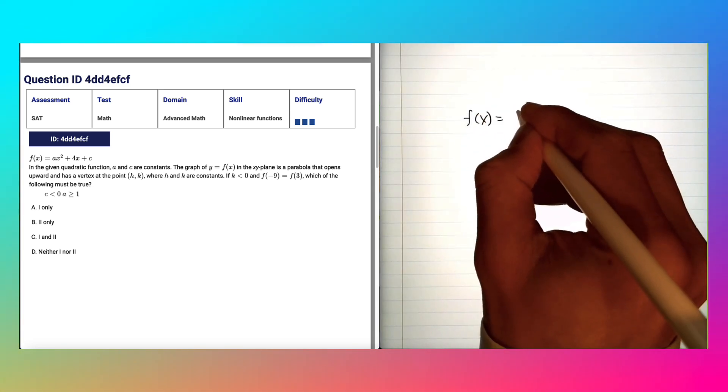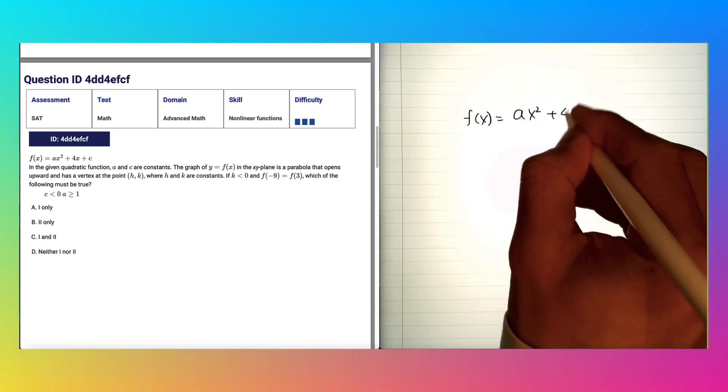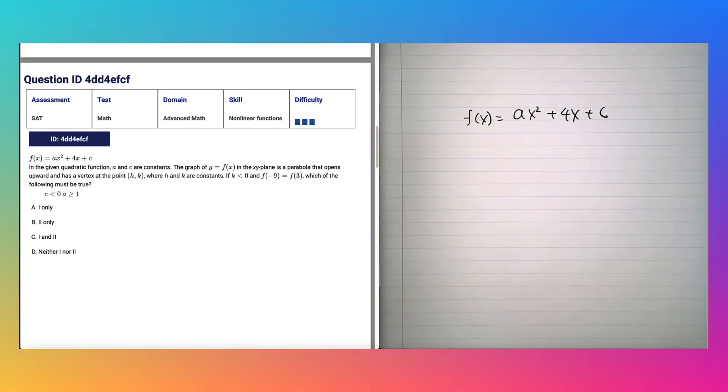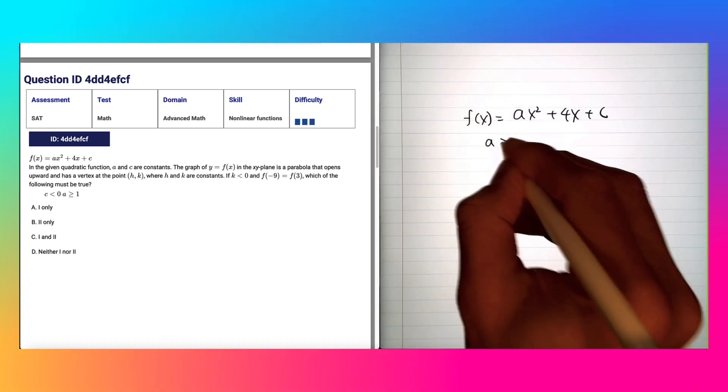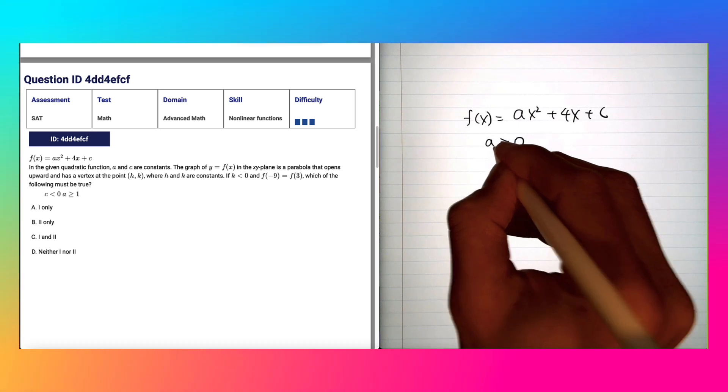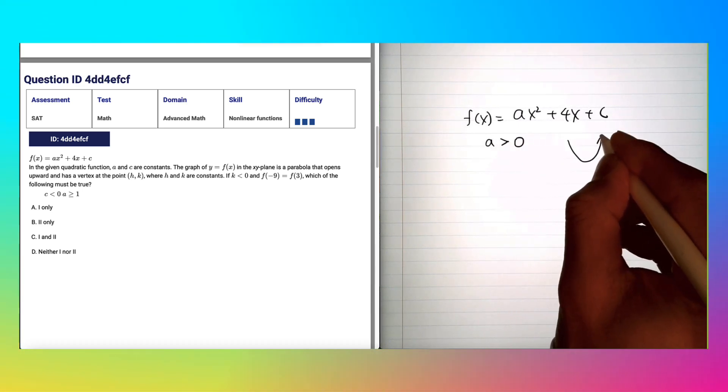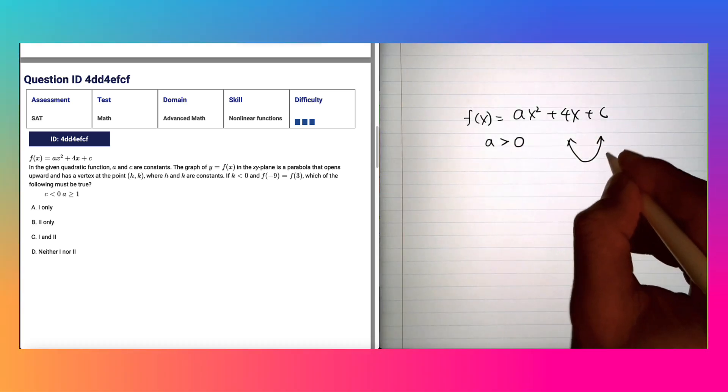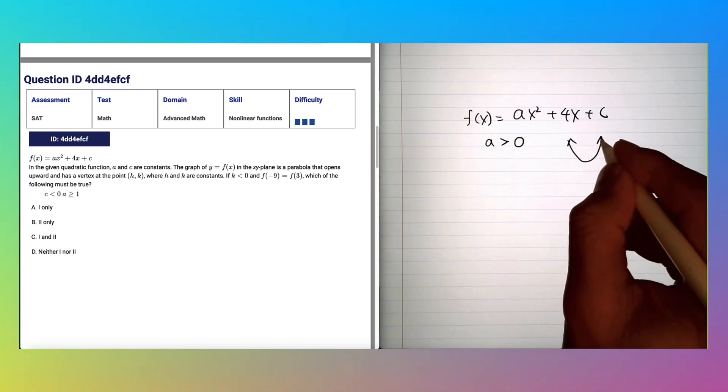f(x) = ax² + 4x + c. In the given quadratic equation, a and c are constants. The graph y = f(x) in the xy-plane is a parabola that opens upward, so that implies that a has to be positive because if the leading coefficient is positive, it's going to face upward.